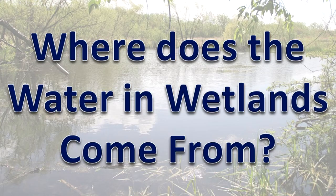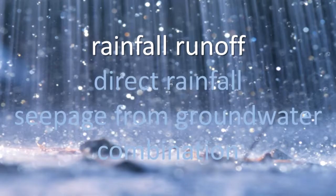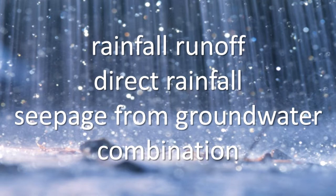Where do the water and wetlands come from? Rainfall runoff, direct rainfall, seepage from groundwater, or a combination of these sources provide the water in wetlands.